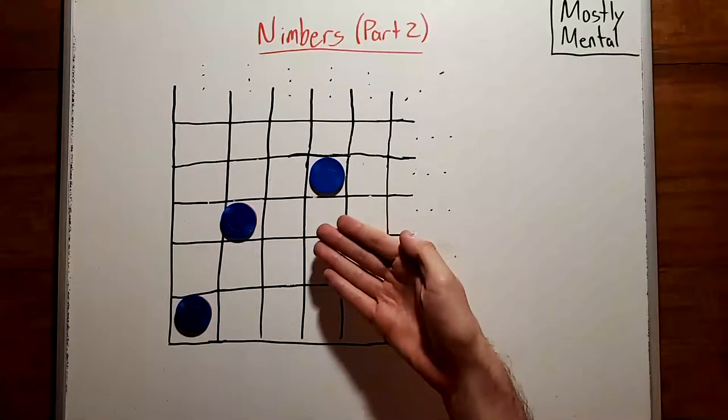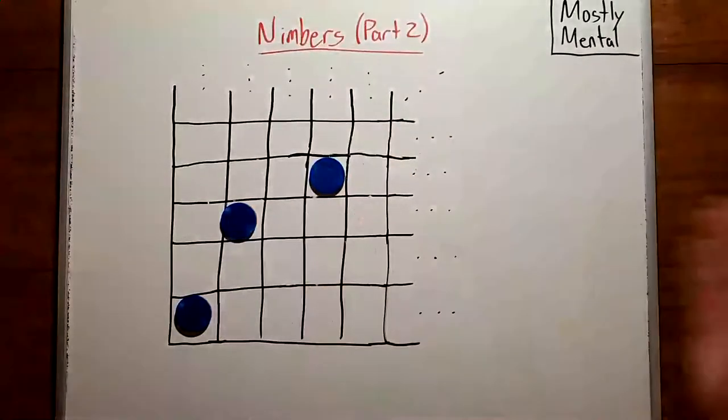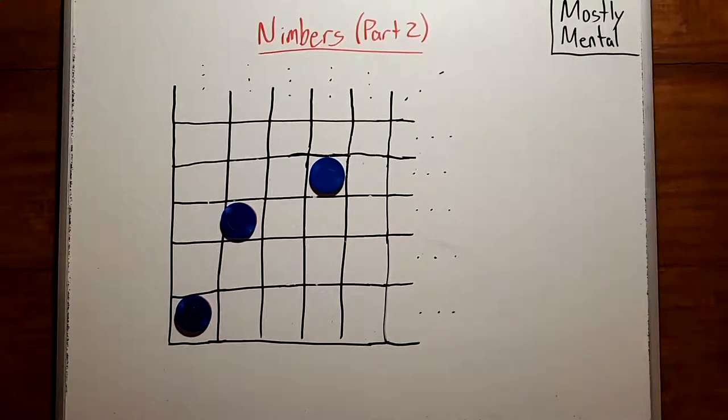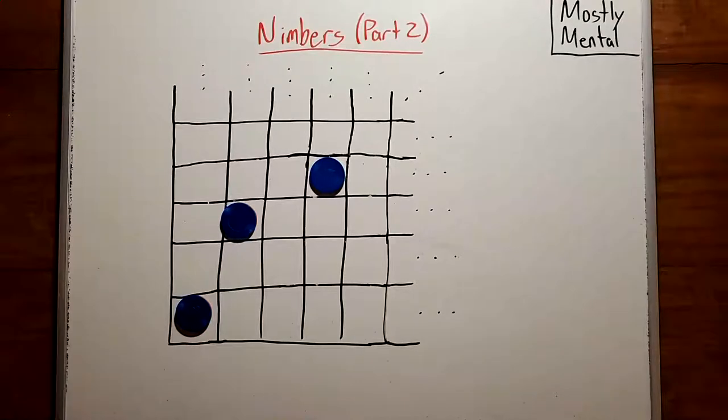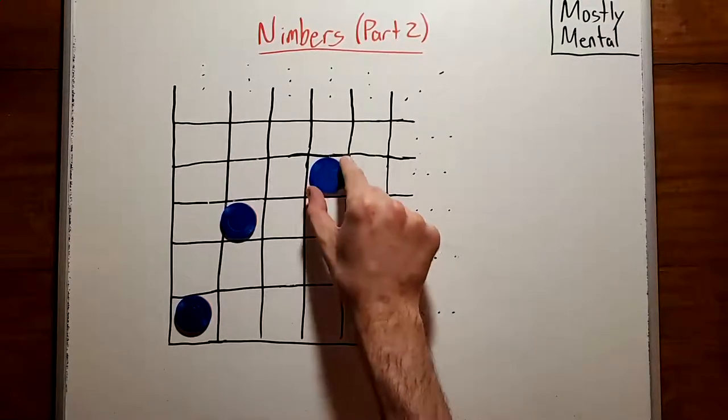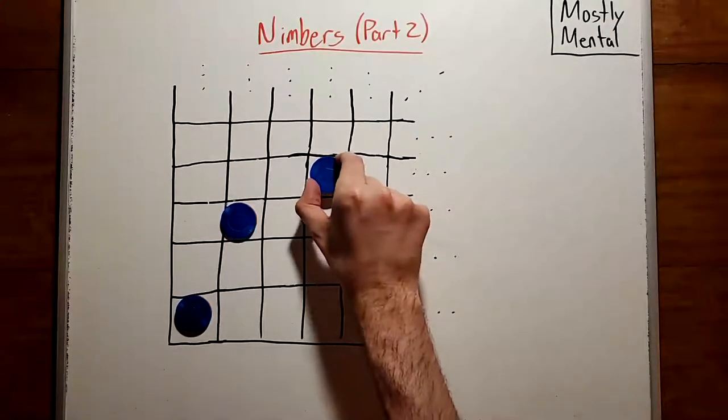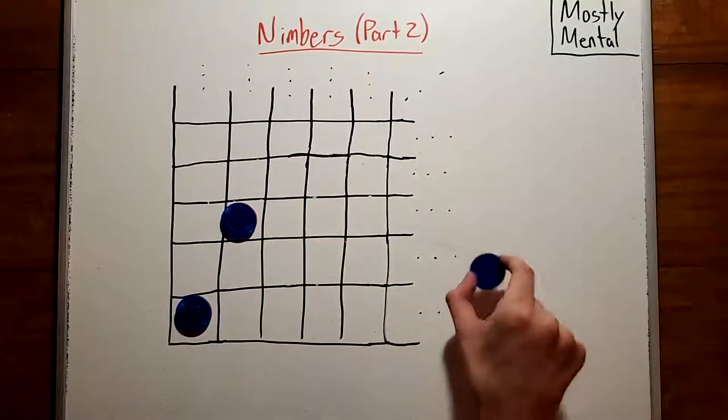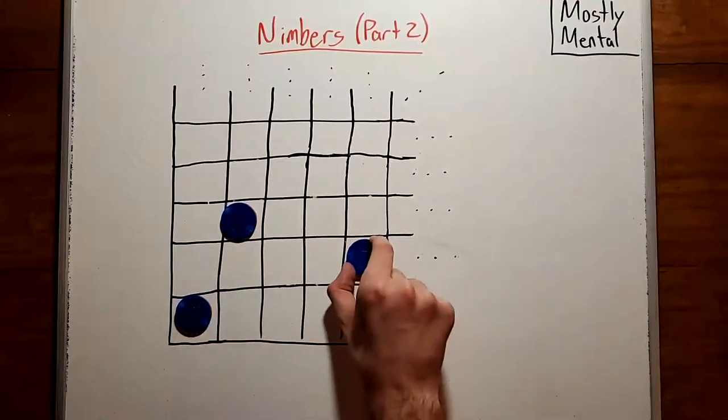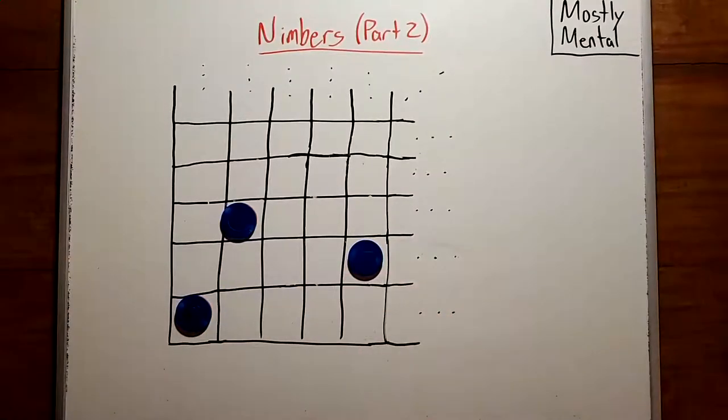Here we have a grid of cells extending infinitely upward and off to the right. Consider a game in this grid with coins in some of the squares. On each turn, you can move any one coin, either somewhere to the left in the same row, or anywhere you like in any row below it.